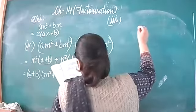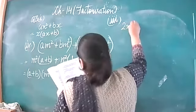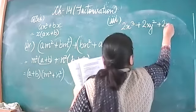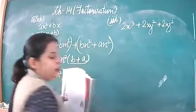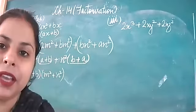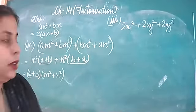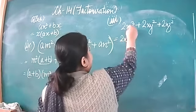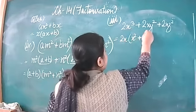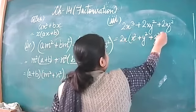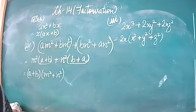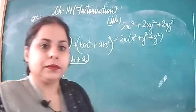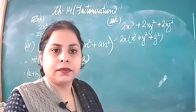The next part is 2x cubed plus 2xy squared plus 2xz squared. From this, 2x is common. In between you are left with x squared plus y squared plus z squared. So the factors are 2x(x squared plus y squared plus z squared).